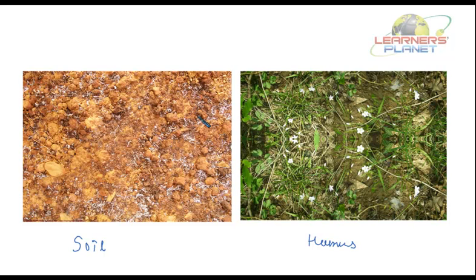However, soil does not have the same properties everywhere, and therefore different varieties of plants grow in different areas. That is why we have some states growing more of a particular crop than others. Wheat primarily comes from Punjab, Uttar Pradesh and Haryana, and major rice producing states are Punjab, Uttar Pradesh and Andhra Pradesh.